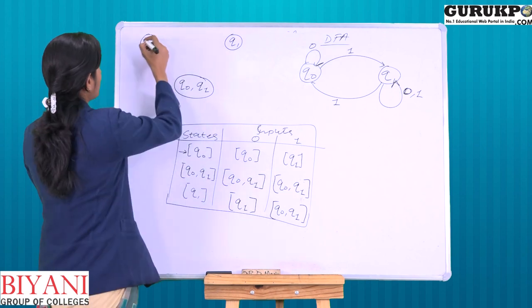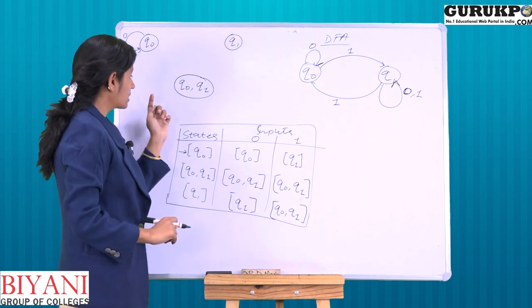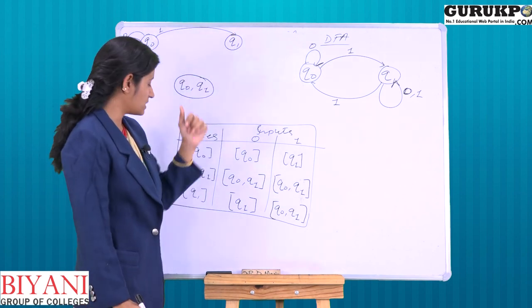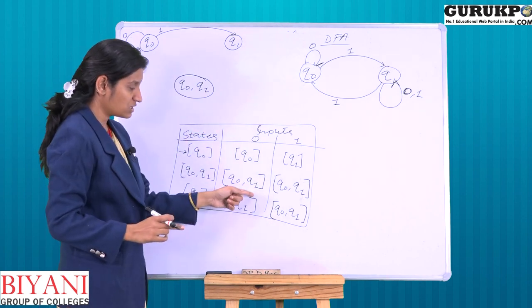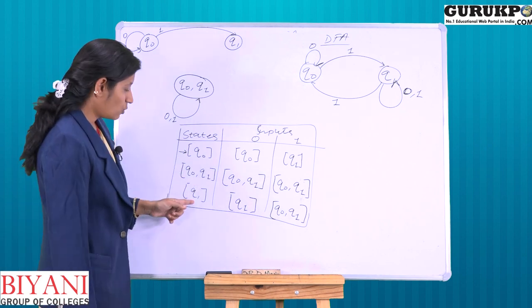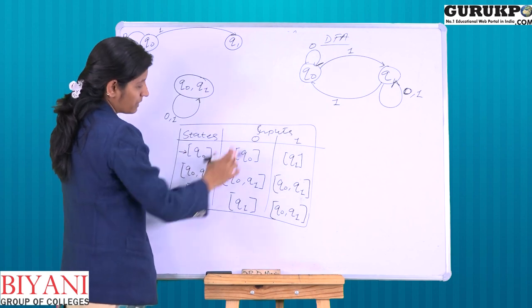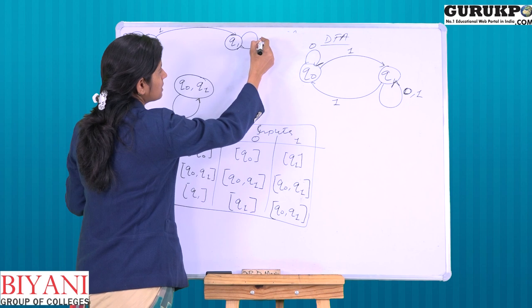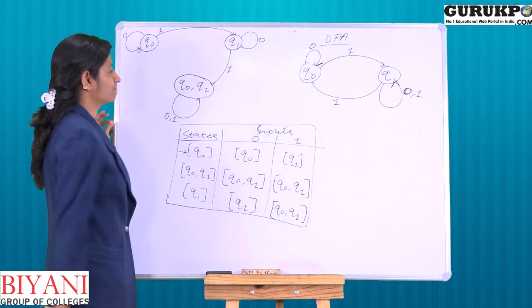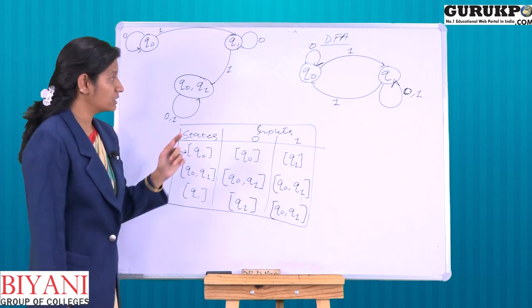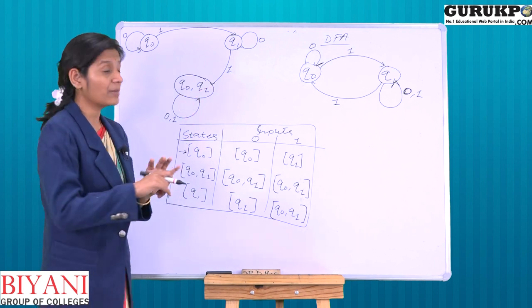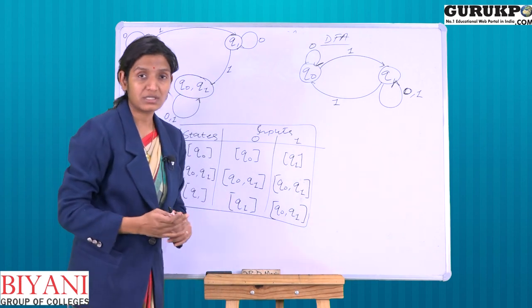Q0 on 0 stays at Q0, Q0 on 1 goes to Q0 Q1. Q0 Q1 on 0 and 1 stays at Q0 Q1. Q1 on 0 stays at Q1, and Q1 on 1 goes to Q0 Q1. This is the difference between DFA and NDFA: here we have 3 states where one state is a combined combination, whereas in NDFA we had 2 unique states. So this is how we can convert from NDFA to DFA.